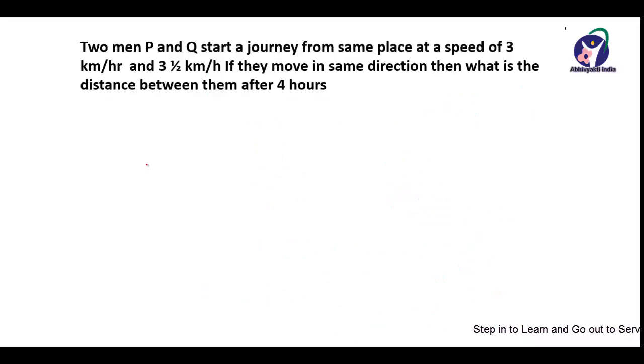Next question is: 2 men P and Q start a journey from same place at a speed of 3 km per hour and 3.5 km per hour. If they move in same direction, then what is the distance between them after 4 hours?